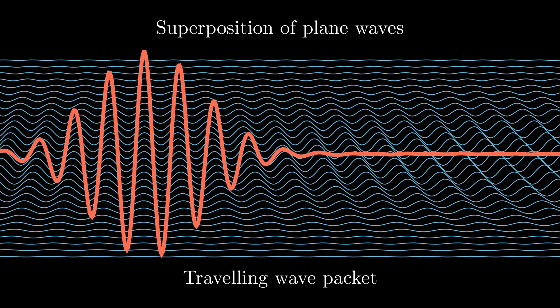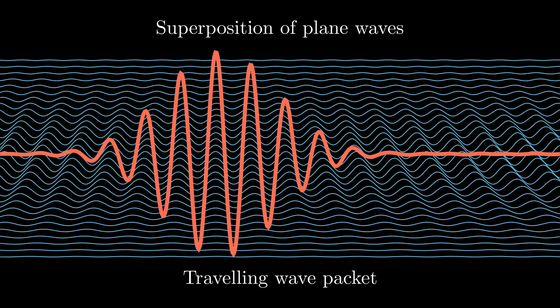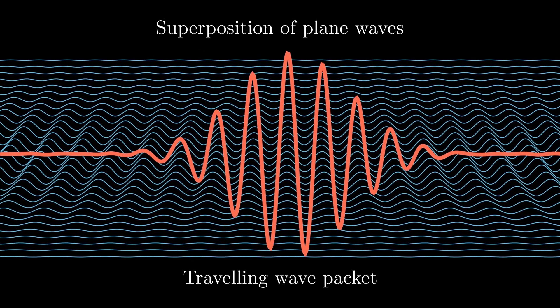This localized entity, called the wave packet, is how quantum mechanics represents free particles.